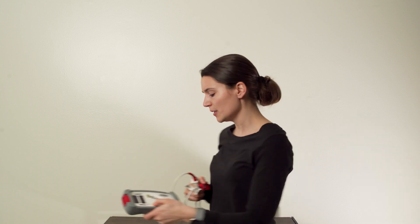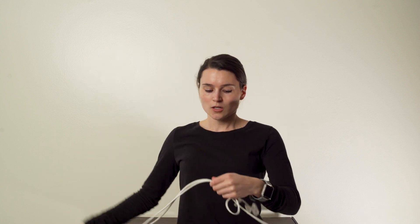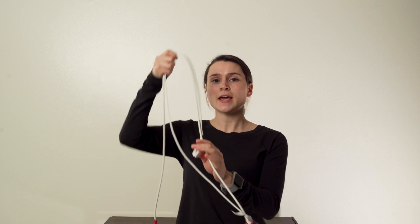For storage, remove the cord from the pulse oximeter. Detach the two cords from one another. Store them by hanging them on a hook on the wall or in a cabinet.